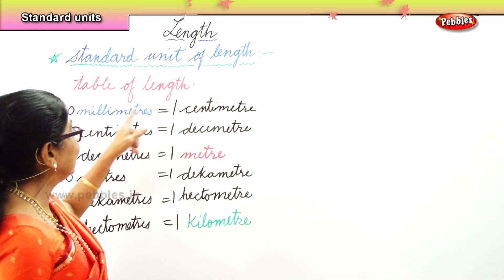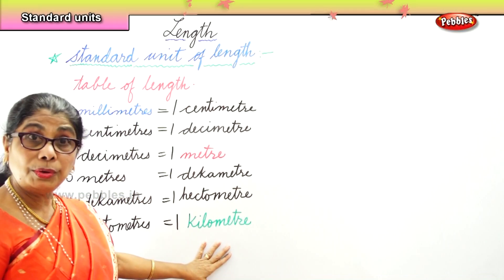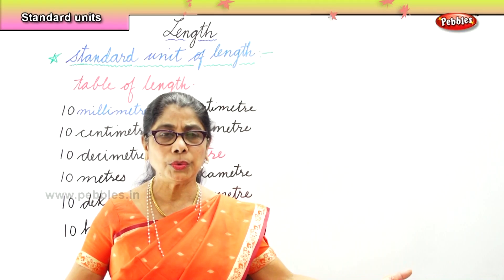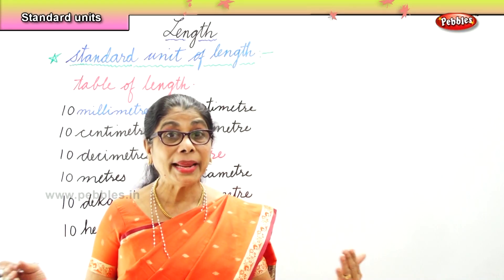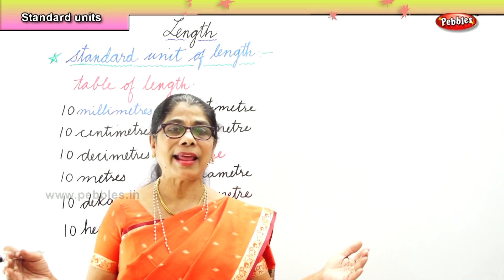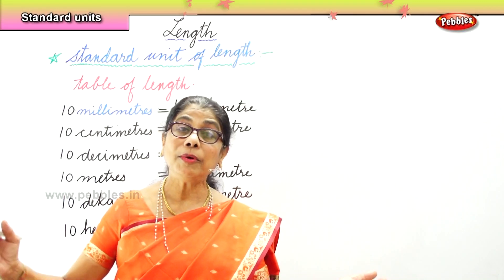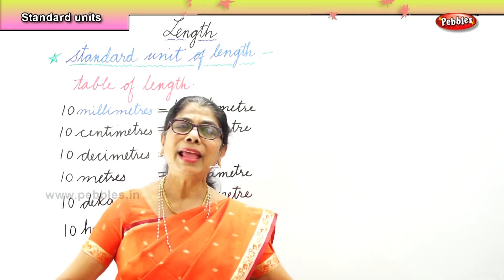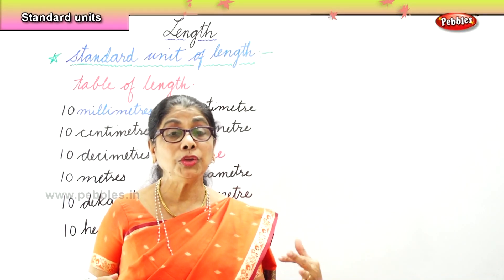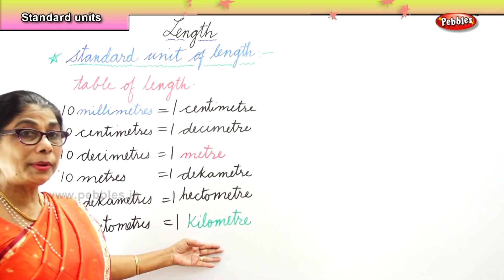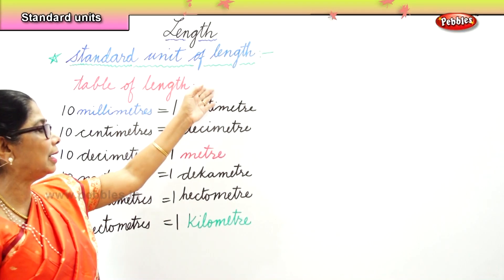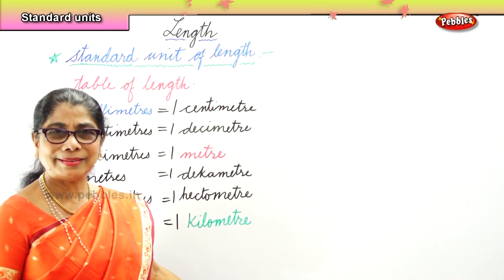So the main units we use are millimeters, centimeters, and meters. Kilometers are used for measuring roads, bridges, rivers, and railway tracks. When you have to build a huge building, or measure airplane runways or any very large structure, we use kilometers. So the main units to remember are millimeter, centimeter, meter, and kilometer.